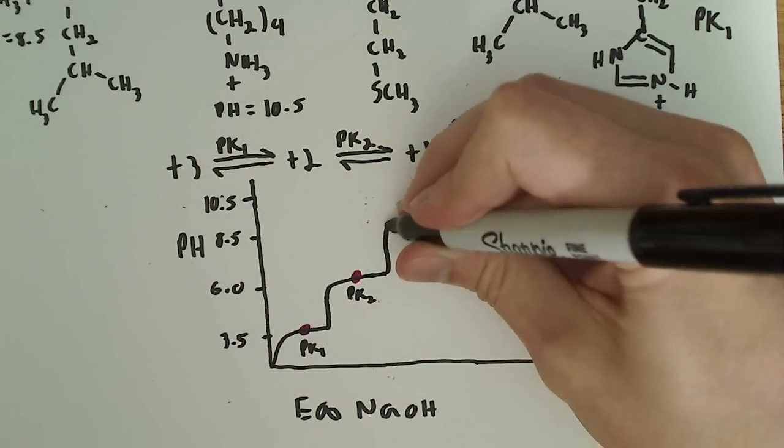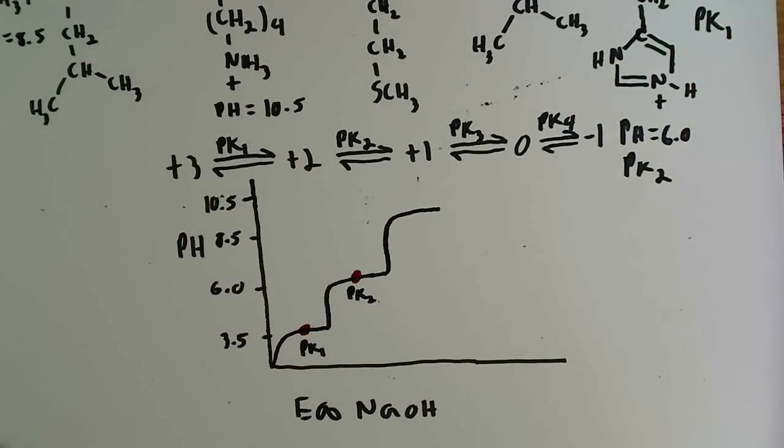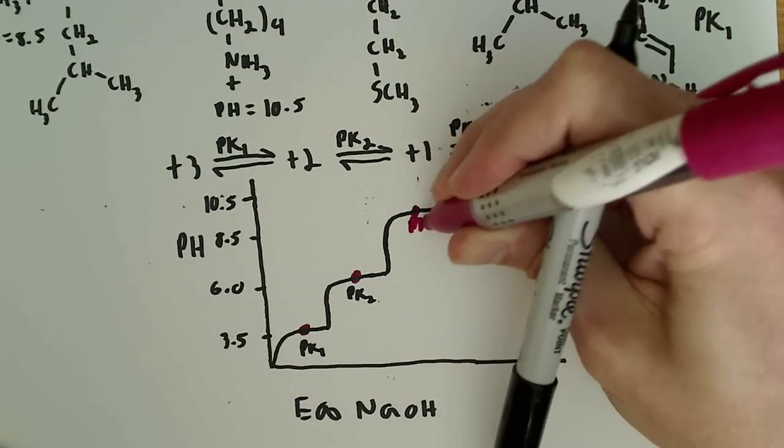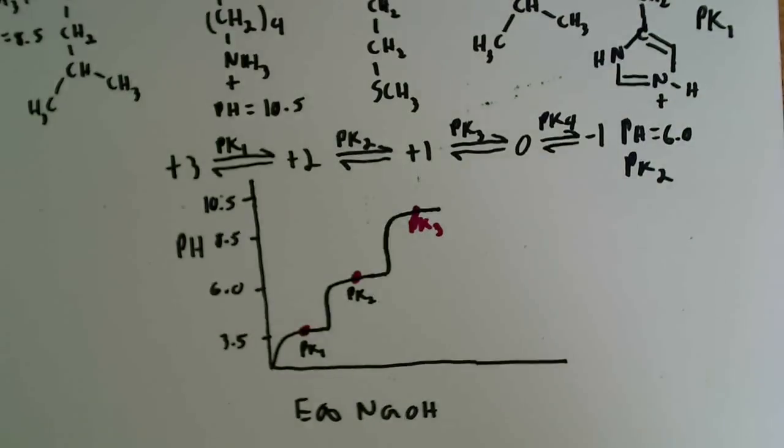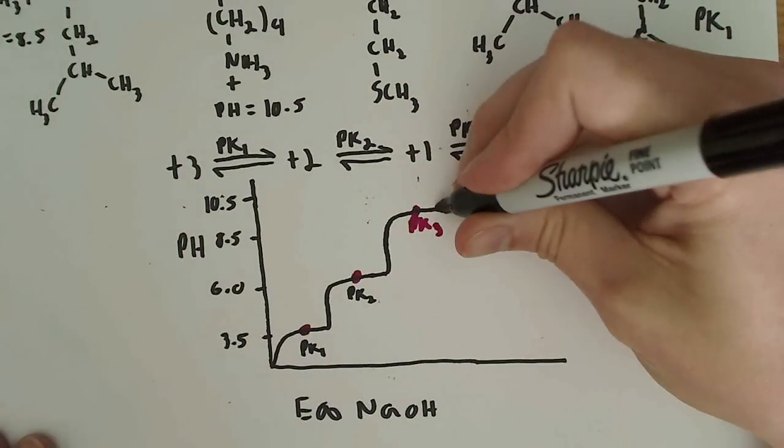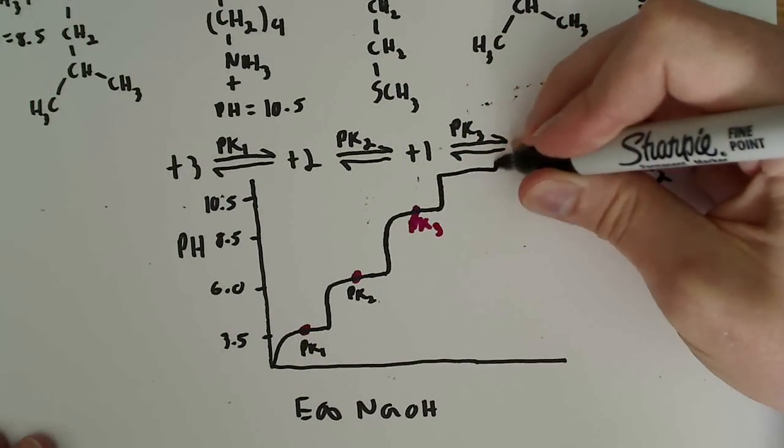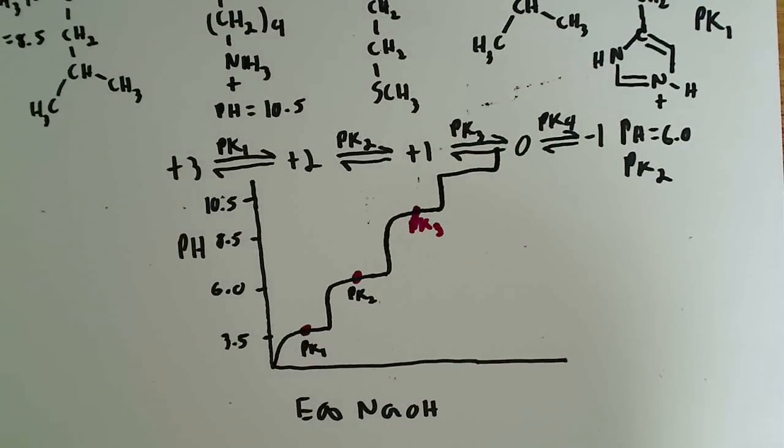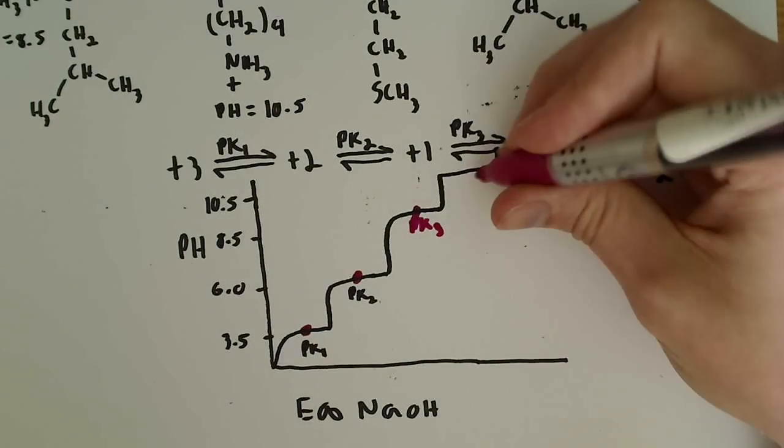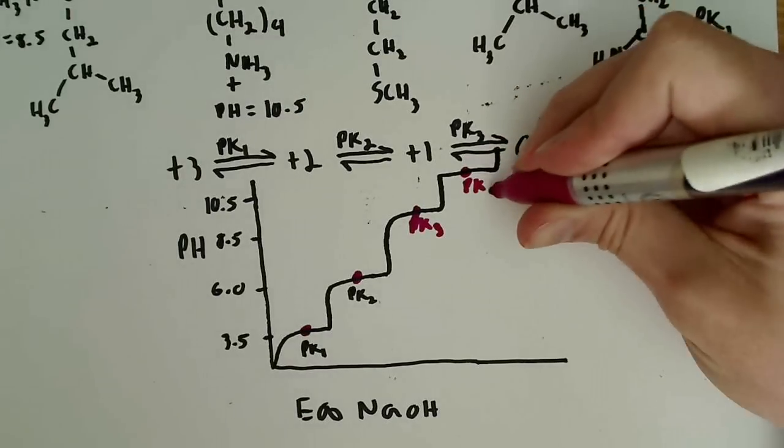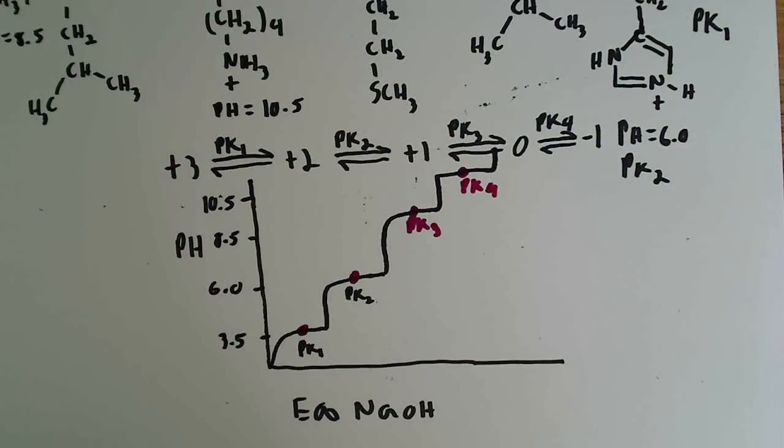We'll keep going up to 8.5, flatten the graph out up there around 8.5, and that's pK3, and then we'll go up to 10.5, flatten the graph out up there, and that's going to correspond to the lysine. So pK4.